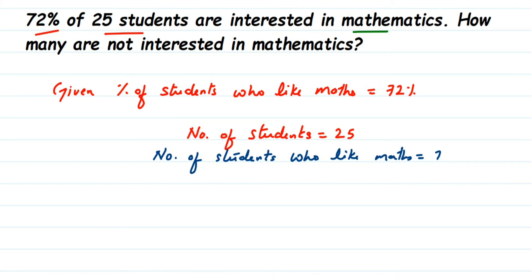Now we're going to find out 72% of 25. So 72% means percentage per hundred.